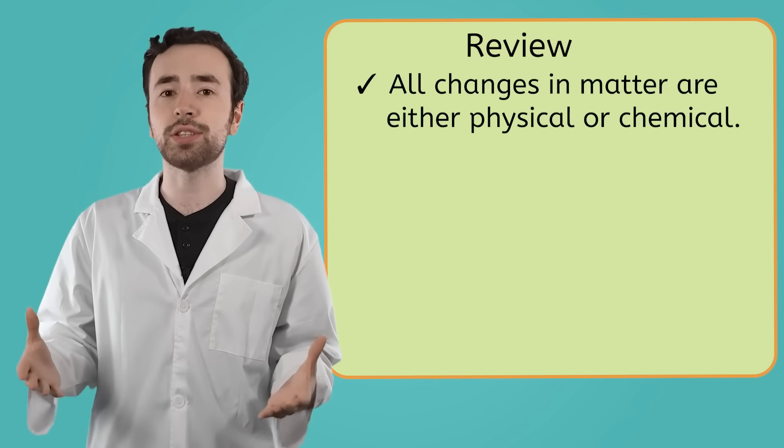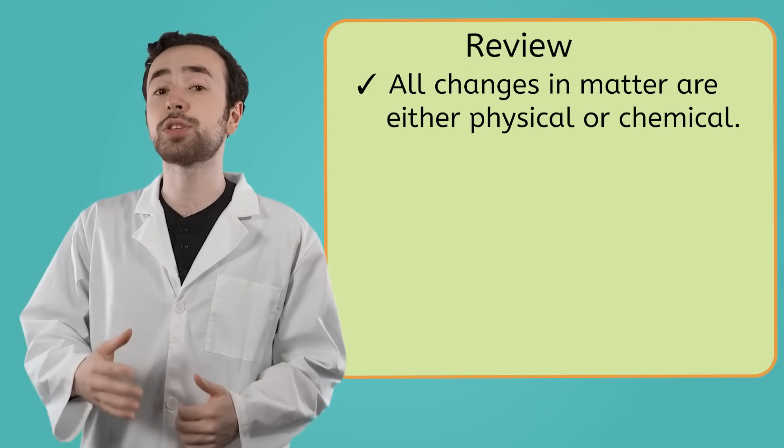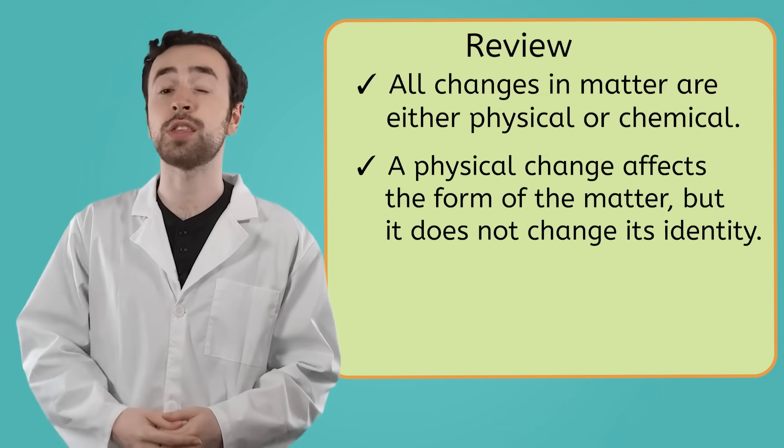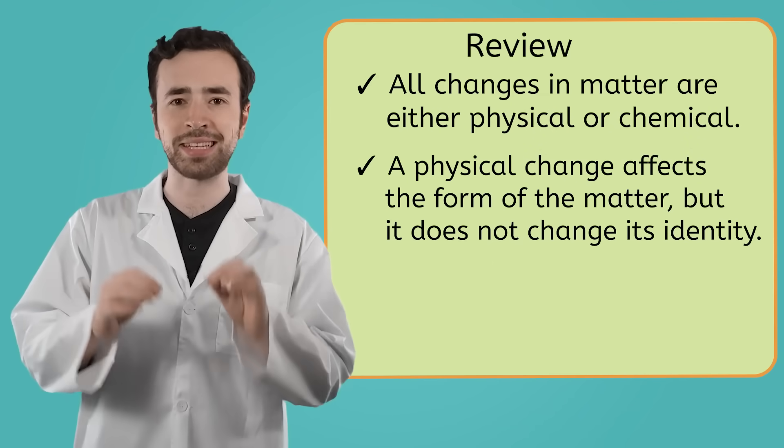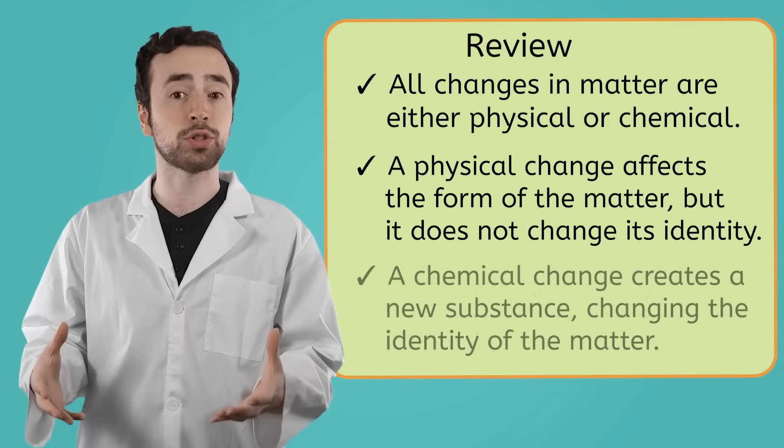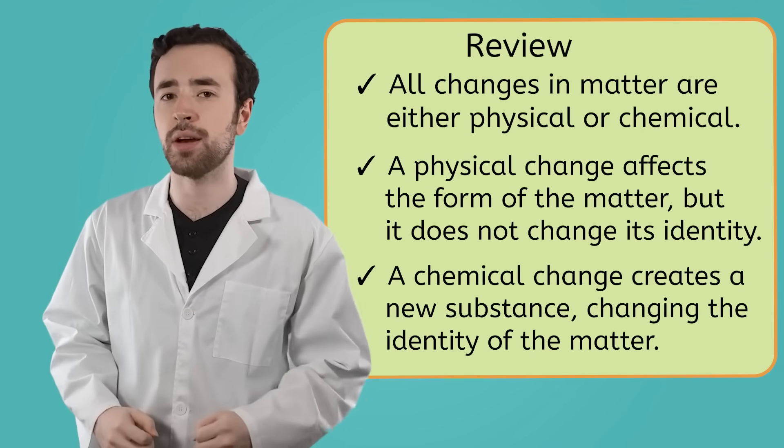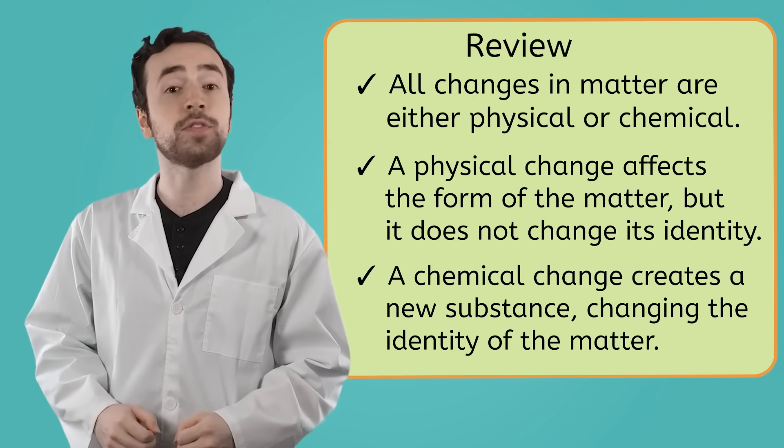Let's recap what we've learned today. All changes that can happen to matter can be described as either physical or chemical. A physical change will change the form of the matter, but not its identity. And a chemical change will create new substances and change the identity of the matter itself. To find out more about physical and chemical changes of matter, be sure to check out the practice questions and activities for this lesson.